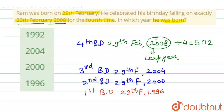His 1st birthday was celebrated on 29th February 1996, because a leap year occurs every 4th year. Therefore, Ram is born on 29th February 1996. The correct answer is option number D, that is 1996.